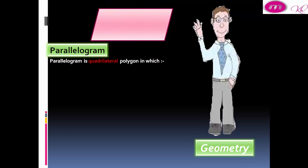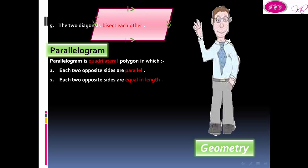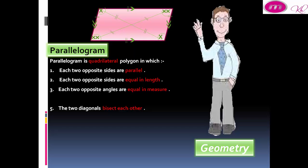Parallelogram is a quadrilateral polygon in which each two opposite sides are parallel. Each two opposite sides are equal in length. The two diagonals bisect each other. Each two opposite angles are equal in measure. The sum of the measures of any two consecutive angles equal 180 degrees.